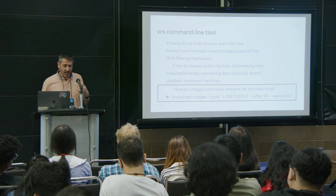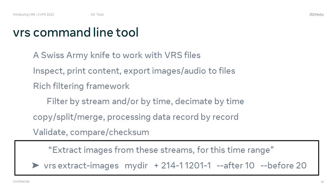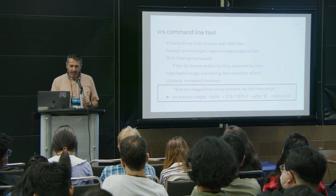What are the tools we provide with the VRS library? We provide the VRS command line tool — a Swiss Army knife for working with VRS files. You can inspect, print content, and export images and audio to files. The VRS tool has a rich filtering framework that lets you select which streams to work on, which time range to use, or decimate data by time — for example, looking at only one image per second. It has functionality to copy, split, merge files, and process data record by record. A typical example: extracting images from a particular set of streams for a particular time range.